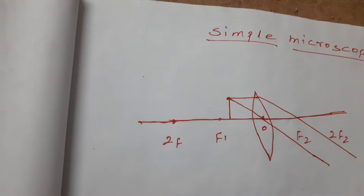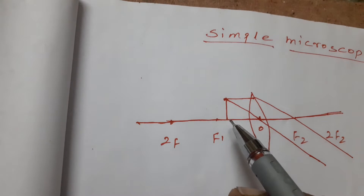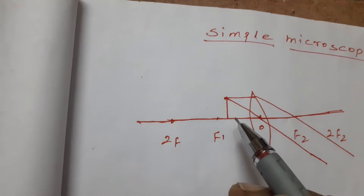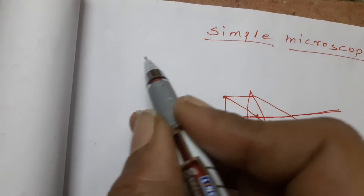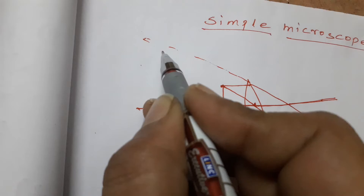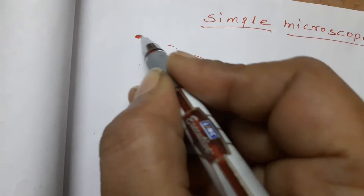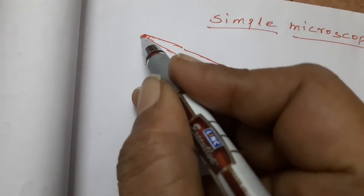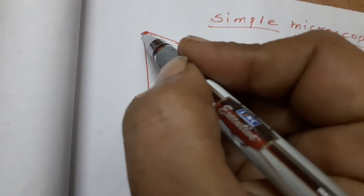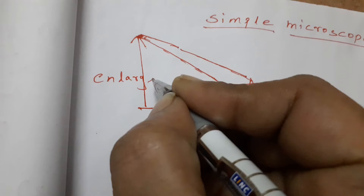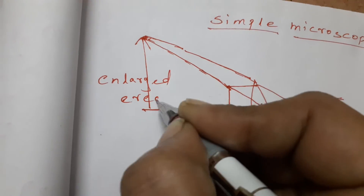The parallel ray will pass through the focus. Since the object is placed before the focal point, the image will be formed on the same side by extending the two lines. These two lines will meet at a point, and you will get an enlarged image.